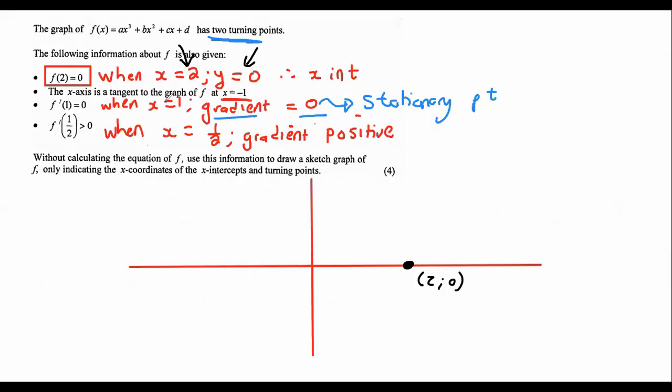Then it says when x is 1, the gradient is 0. So, oh wait, I forgot about this one. Let me get a highlighter quickly for you guys. Let's get a highlighter. Forgot about this one. So let's do that.